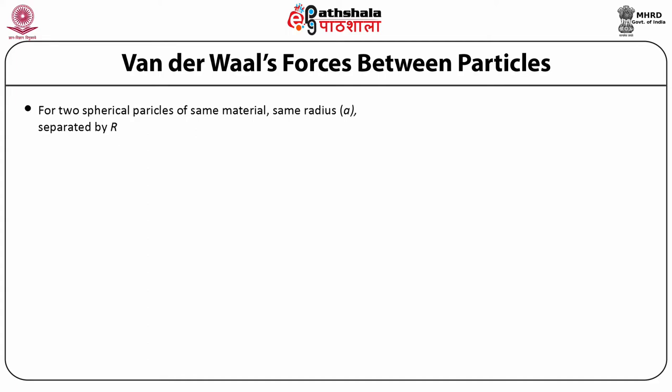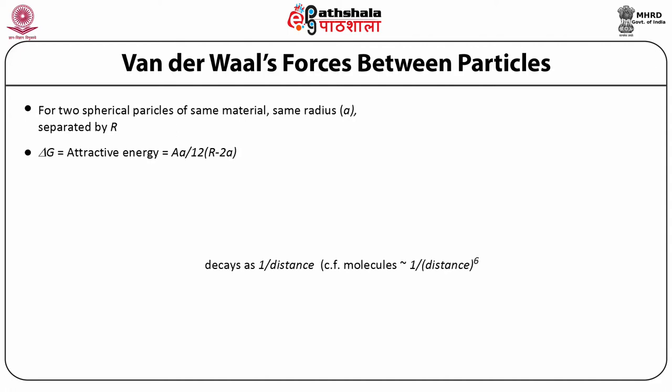The Van der Waal attraction energy between two particles depends on the material they are made of, their shapes, and the medium separating them. For two spherical particles each of radius a with their centers separated by capital R, the attraction energy is given as ΔG = −A·a / (12·(R − 2a)), applicable when R − 2a is very small, i.e., the particles are very close to each other.